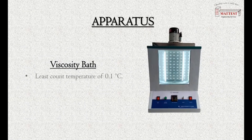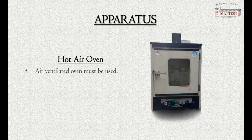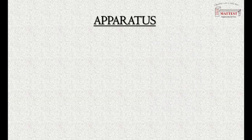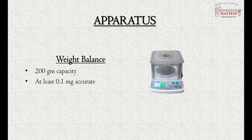The viscosity bath provides accurate temperature control to 0.01 degree centigrade. A hot air ventilated oven must be used, with a range up to 150 degrees Celsius. A weight balance with at least 200g capacity and 0.01mg accuracy is also required.